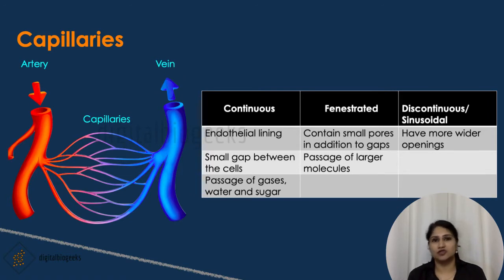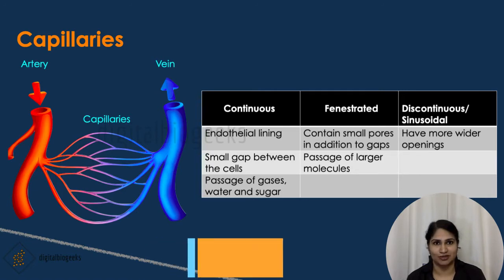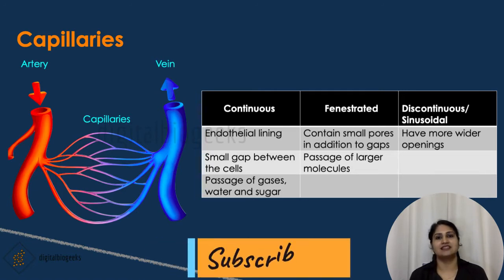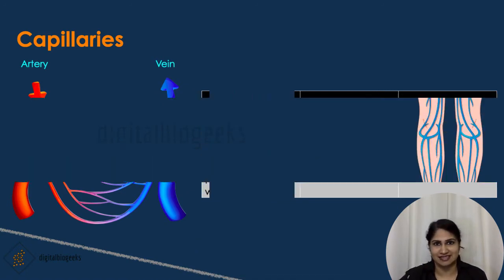In fenestrated capillaries, there are more pores in addition to the gaps in the endothelial cells, allowing the passage of much larger molecules. In sinusoidal capillaries, there are much larger pores in the endothelial cells.